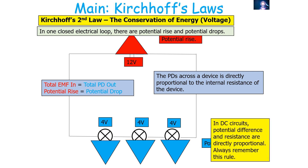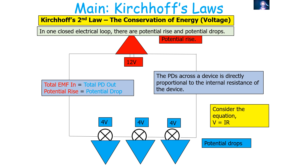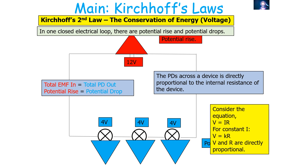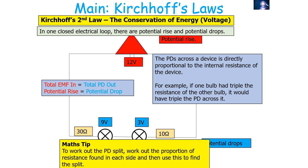The PD across a device is directly proportional to its resistance. Considering V = IR, for a constant I: V = KR, so V and R are directly proportional. If one bulb has double the resistance of another, it has double the potential difference across it; triple the resistance means triple the PD. To work out the potential difference split, calculate the proportion of resistance for each device and use this proportion to find the split. Add the resistances to find the total, then find the proportion each device takes.